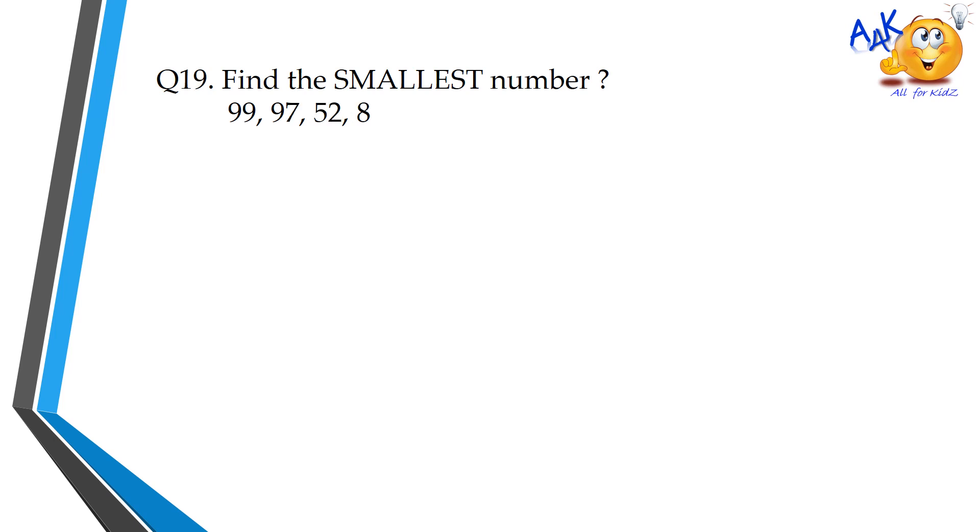Q19. Find the smallest number: 99, 97, 52, 8. Answer: 8.